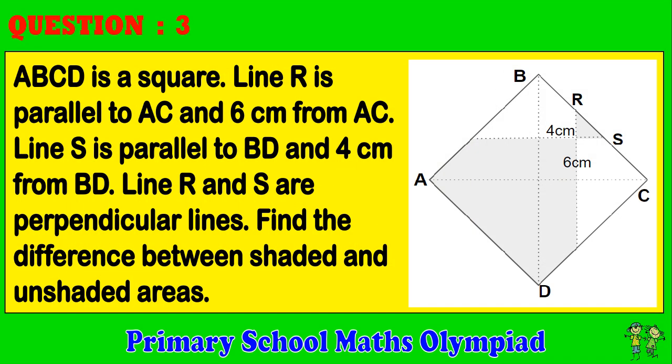Question 3. ABCD is a square. Line R is parallel to AC and 6 cm from AC. Line S is parallel to BD and 4 cm from BD. Line R and S are perpendicular lines. Find the difference between the shaded and unshaded areas.